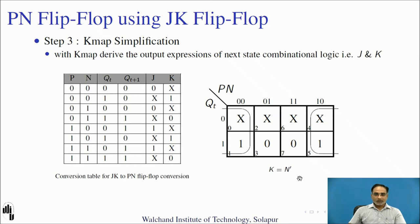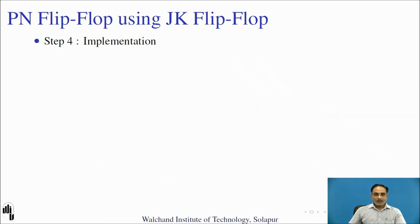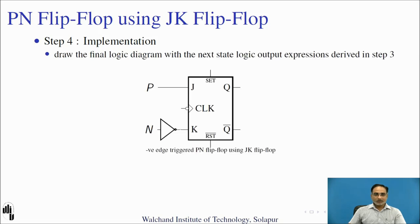Let us use these two expressions to complete the final logic diagram. We derived J = P, so we simply use one wire and name that input P. For K we derived K = N̄, so we require one inverter — input N is passed through the inverter to the K input. This is the final diagram of the negative-edge-triggered PN flip-flop using a negative-edge-triggered JK flip-flop. This is how you can design any arbitrary flip-flop using any other flip-flops.